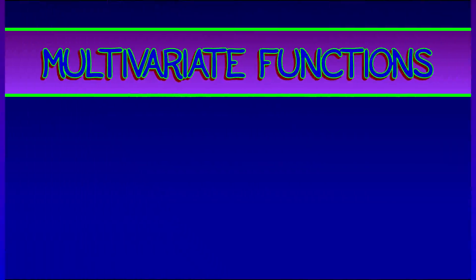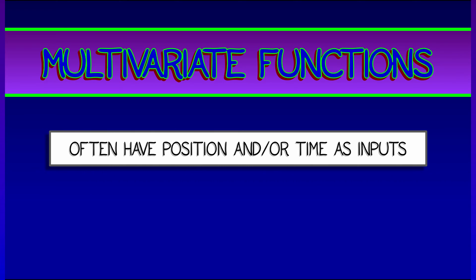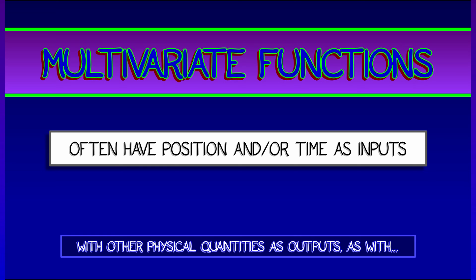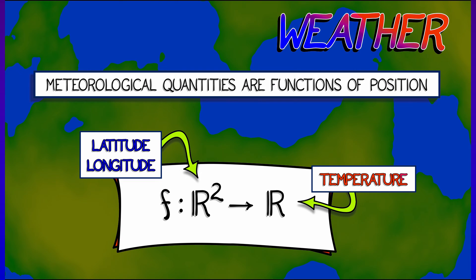Now, that's not all. Multivariate functions often have position or time as inputs, and this makes a lot of sense in certain physical contexts, such as the weather. If you think about latitude and longitude as inputs and then temperature as an output, you might get those implicitly defined curves.